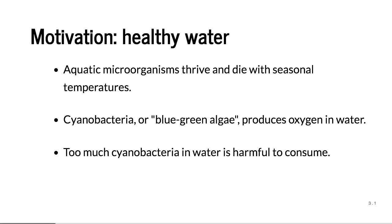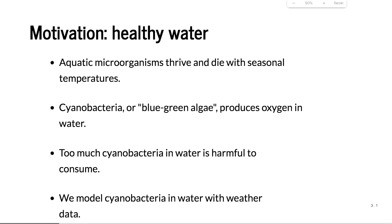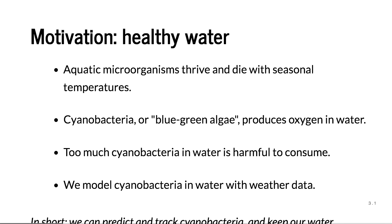Unfortunately, when you have too many cyanobacteria, they can be toxic — depending on the species, they'll actually poison you, or at least cause stomach problems. Having too little is bad, and having too much is bad. So we need to monitor and moderate the number of cyanobacteria cells in our water. Using weather data, we can hopefully find out what kind of numbers might be in the river. In short, we can predict and track cyanobacteria and keep our water safe and healthy.